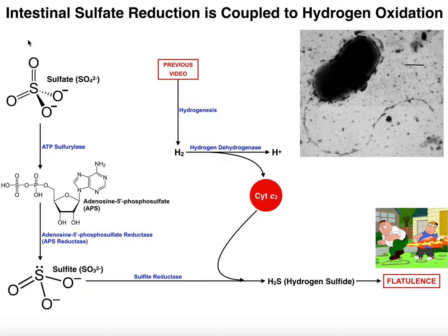In this video, ultimately, a molecule like sulfate, or SO4²⁻, is going to be reduced into hydrogen sulfide, which is directly the molecule that's been shown to produce the terrible smell of flatulence, and also compounds such as methyl hydrogen sulfide. Sulfate has the chemical formula SO4²⁻, with a central sulfur atom surrounded by four oxygens with a 2- charge overall.